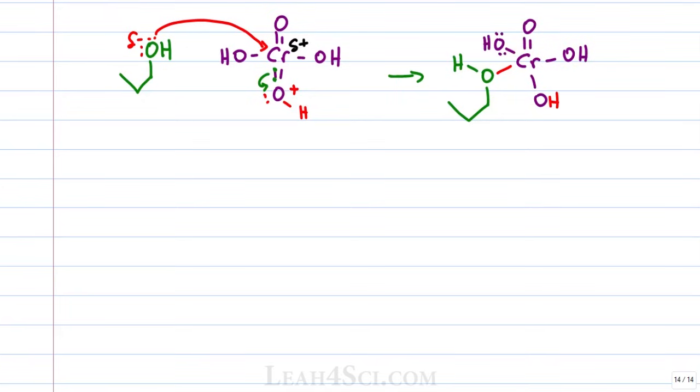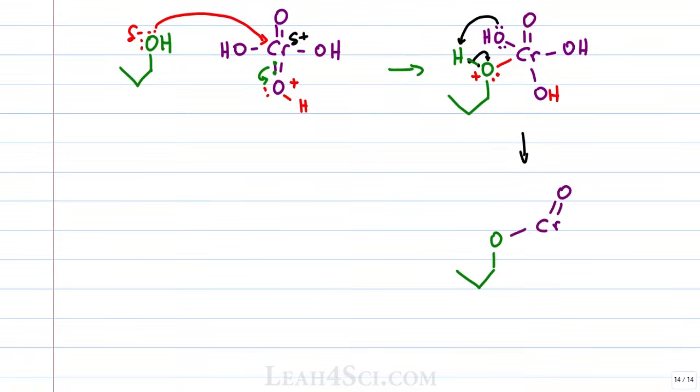The oxygen that attacked now has 3 bonds and 1 lone pair for a formal charge of plus 1. We have to get rid of that electron and we show an internal proton transfer where one of the hydroxy groups on chromium will reach for that proton giving the electrons back to the oxygen atom. Chromium now has a positive oxygen. Oxygen on our starting molecule now has 2 lone pairs and is back to being neutral. This intermediate is called the chromate ester because it looks like an ester with chromium at the center.